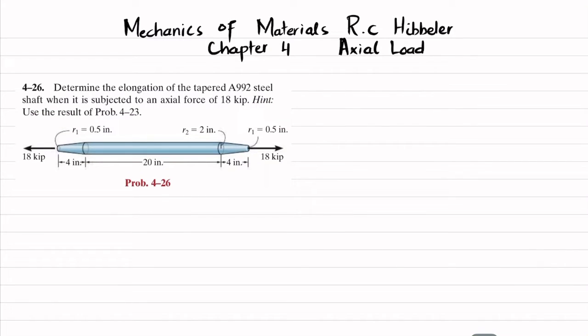You can see this is the shaft that is tapered over a length of 4 inches, then 20 inches that is uniform diameter, and then at the end there is a tapered portion that is acted upon by axial load of 18 kips. At this point R1 is 0.5 inch and R2 is 2 inches.